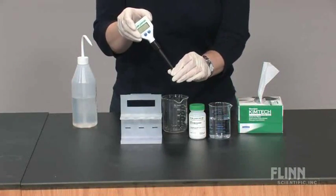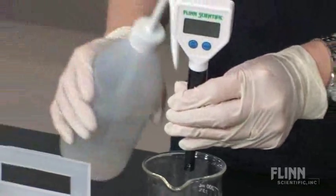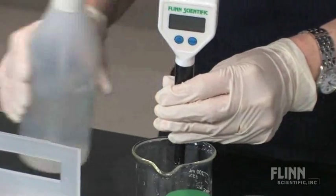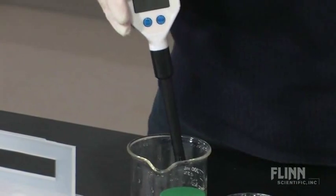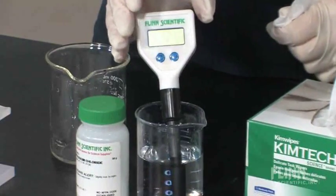If the electrode dries out while in storage or the pH meter reading does not stabilize when taking measurements, the electrode can be reconditioned by soaking it in saturated potassium chloride solution for approximately 30 minutes. At that point, the pH meter is ready to calibrate.